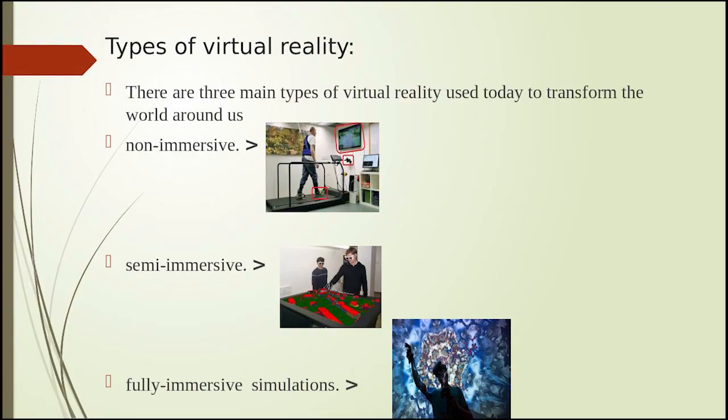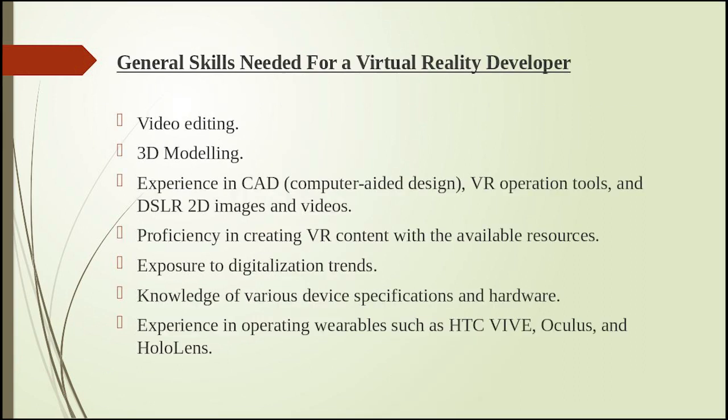There are three types of virtual reality. Non-immersive VR provides a computer-generated environment but allows the user to stay aware of and keep control of their physical environment. Semi-immersive VR provides a partially virtual environment, mainly used for training and education. Fully immersive VR provides an artificial environment that replaces the user's real-world surroundings.